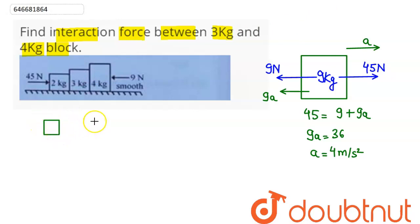So if we draw FBD of this 2 kg, 3 kg block, and this 4 kg block, hence we show here all the forces acting on this system. So 45 newton is acting here on this 2 kg and 9 newton here is acting on this 4 kg mass.